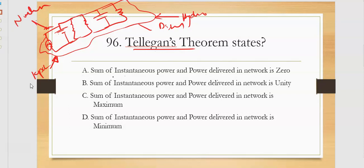Either power sources are there internally, where we consume, then the algebraic sum of the supplied power with respect to the power delivered will be equal to zero. So in such a case that is treated as Tellegan's theorem. So here the option is sum of instantaneous power and power delivered in the network is zero.